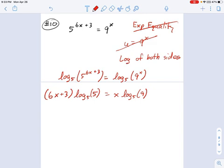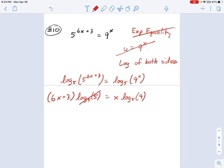And then over here, we have x times log base 5 of 9. Let's see what happens. Log base 5 of 5, that crosses out. That's just equal to 1. So I get 6x plus 3 equals x log base 5 of 9.